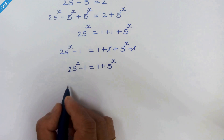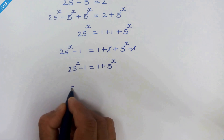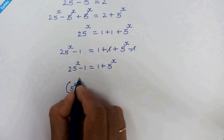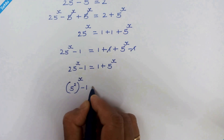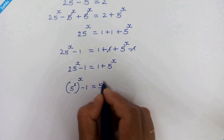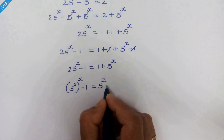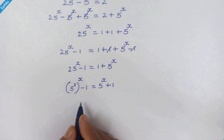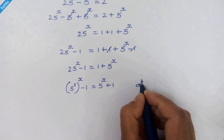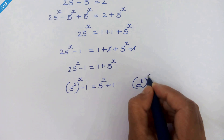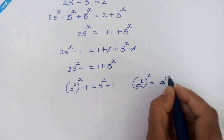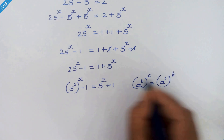Now 25 can be written as 5 squared, so the left side becomes 5 squared whole raised to x minus 1, and the right side can be written as 5 raised to x plus 1. Now if we have a raised to b, whole raised to c, then it will be a raised to c whole raised to b.